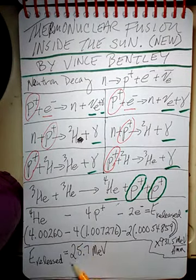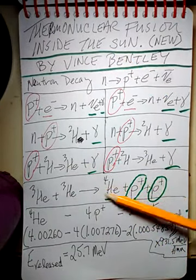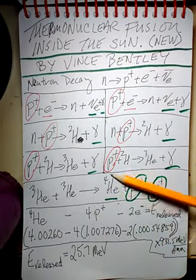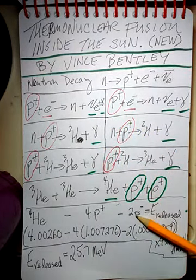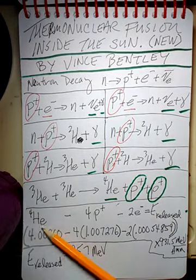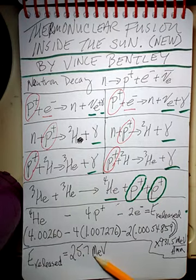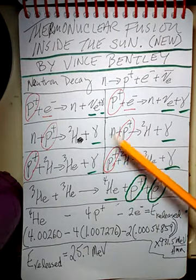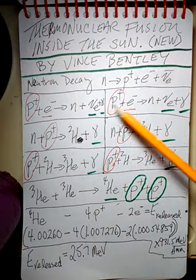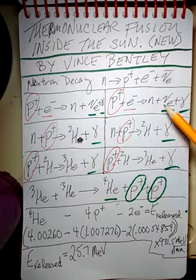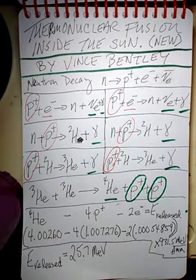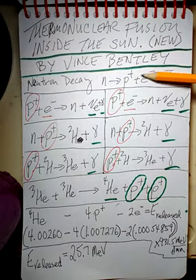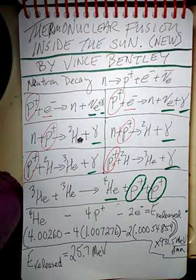So 25.7 MeV is the energy released in this reaction — in addition to the fact that the reaction produced helium from protons. Four protons and two electrons created one helium nucleus and 25.7 mega electron volts of energy, released as gamma ray photons and, to a lesser degree, the two electron neutrinos produced in the earlier steps. This is the primary process — called the proton-proton cycle — within stars about the mass of our Sun.